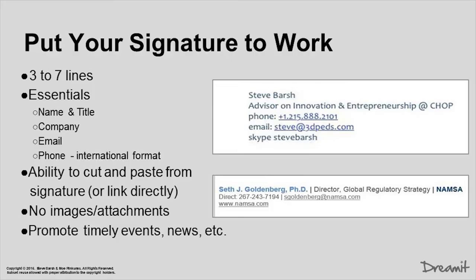Make sure to put the phone number in international format because when you're building an early-stage company, you're going to deal with people all around the world. The nice thing about that signature is you want to have the ability to cut and paste or link from it directly — so it's not an image or a JPEG of your signature, just plain old text that somebody can copy and paste into their contact tracking system. No images, no attachments. When people put logos in an email as an image and it shows up as an attachment, that decreases the open rate. You can also use your signature to promote timely events — like 'see us at South by Southwest' or 'we'll be at CES' — and include any important news.